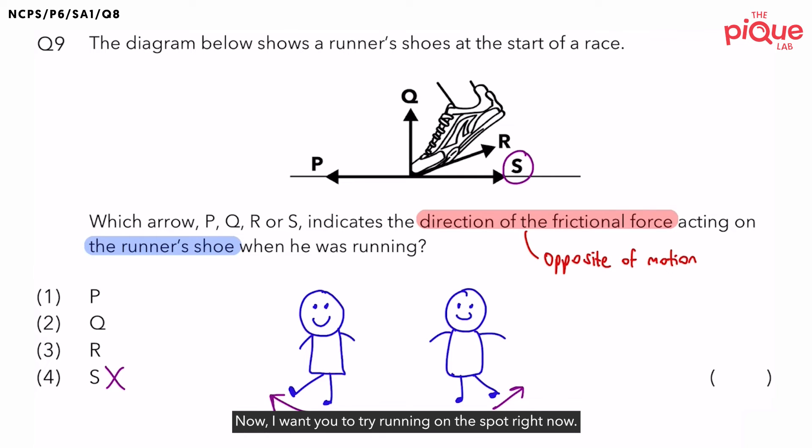Now, I want you to try running on the spot right now. When you are running forward, do you kick your foot forward like the runner on the left or do you kick your foot backwards like the runner on the right? Usually, we will kick our foot backwards so that we will have traction and we can run forward.